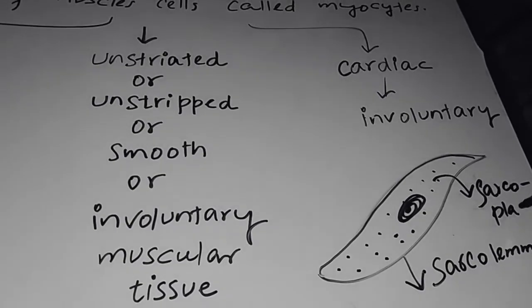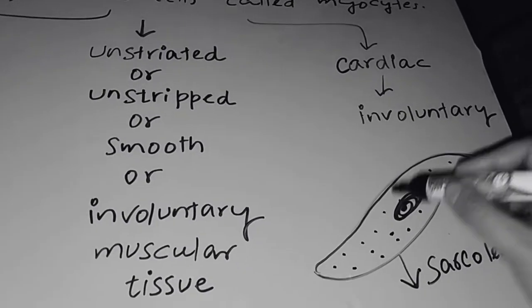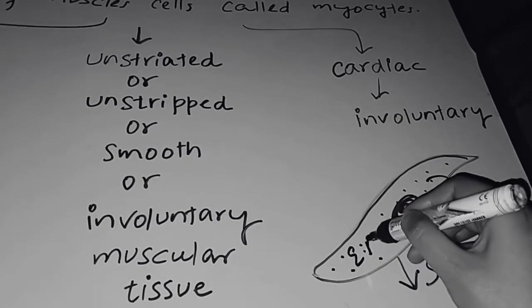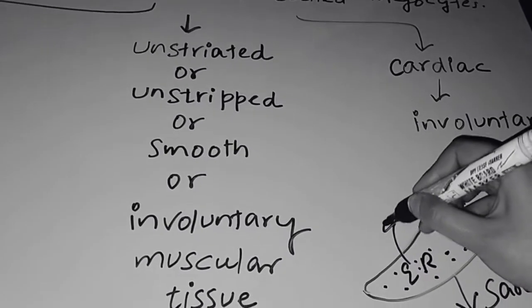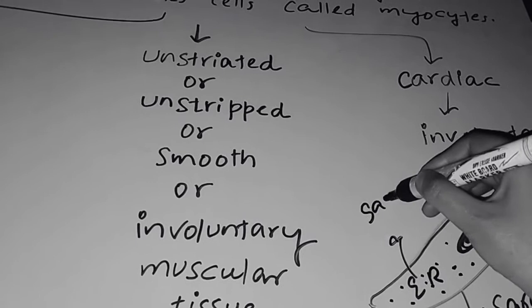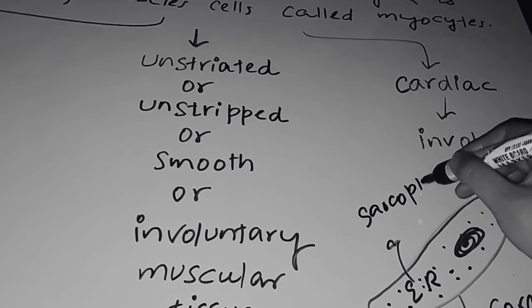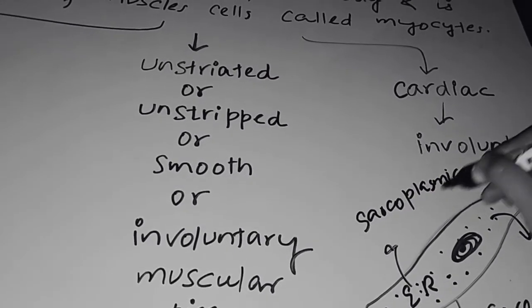Sarcoplasm is the cytoplasm of muscle cells. So endoplasmic reticulum, you must have heard the name, that is one of the important cellular organelles. Here its name is sarcoplasmic reticulum.